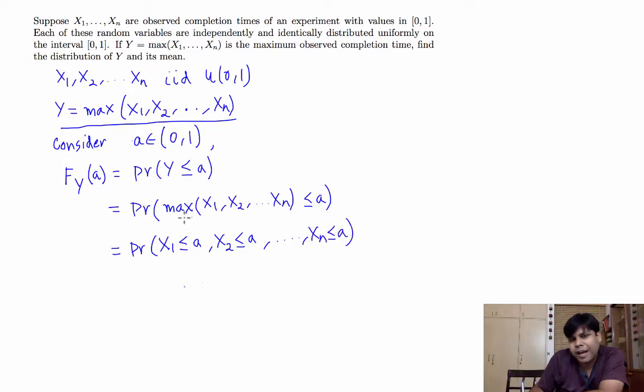The reason is because max of these random variables will be less than equal to a if and only if each of them will be less than equal to a.